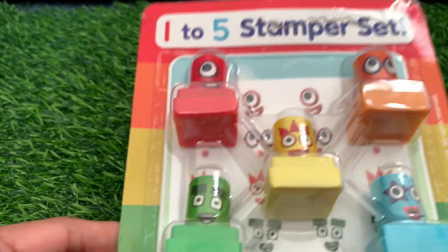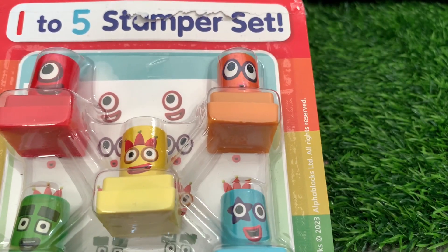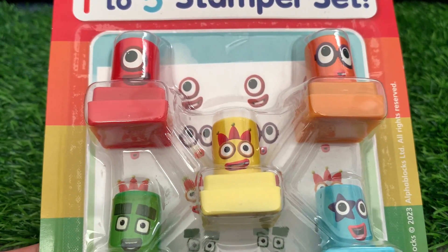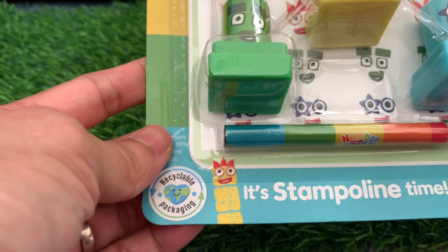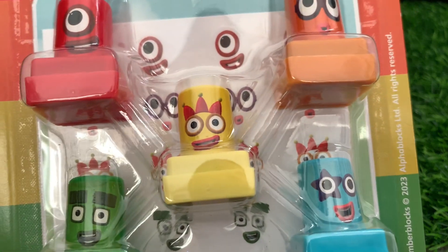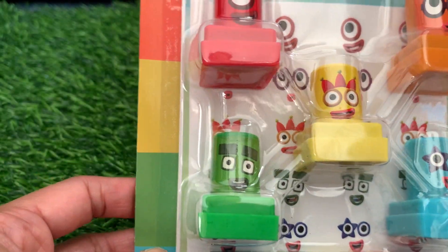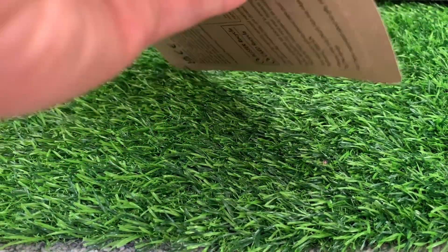Hello everyone, welcome back to our channel Hello George. And today we will see and check out number blocks one to five stamper set. I'm so excited, are you? Now let's start checking them out. Look, we have number blocks one, two, three, four, and five. Let's open it up.